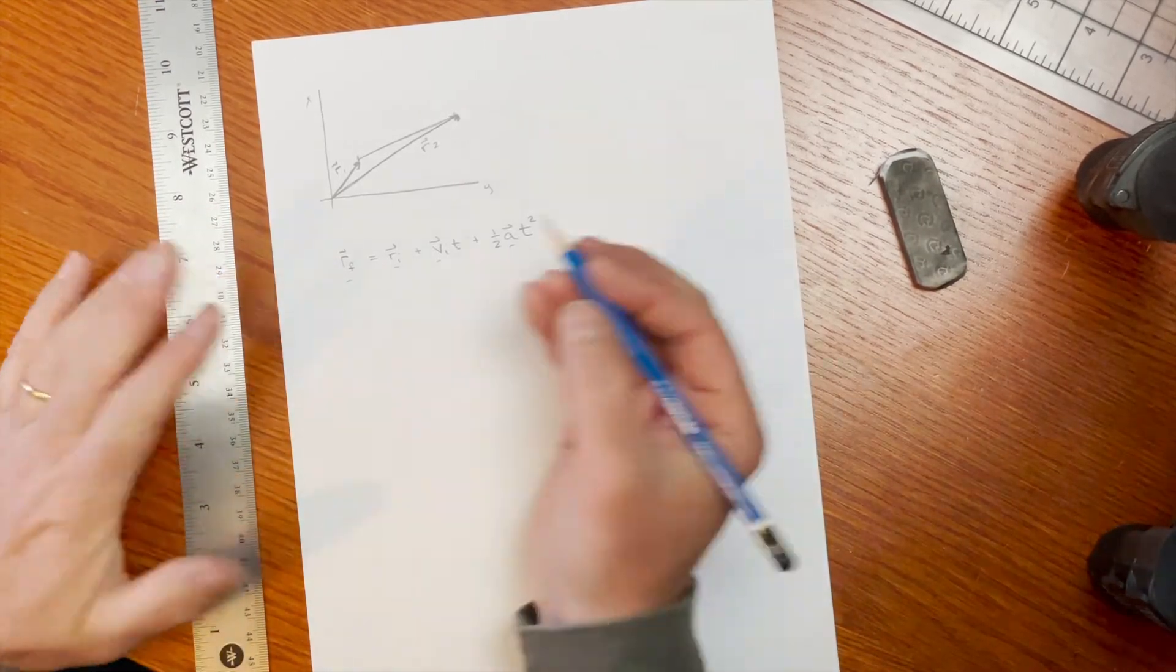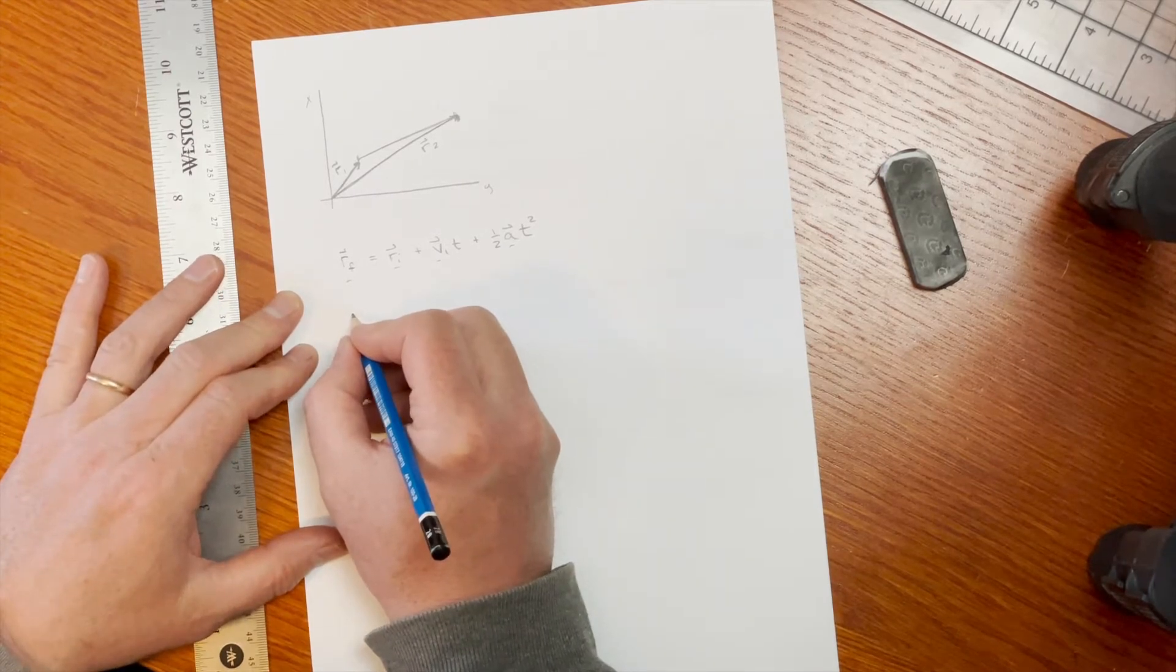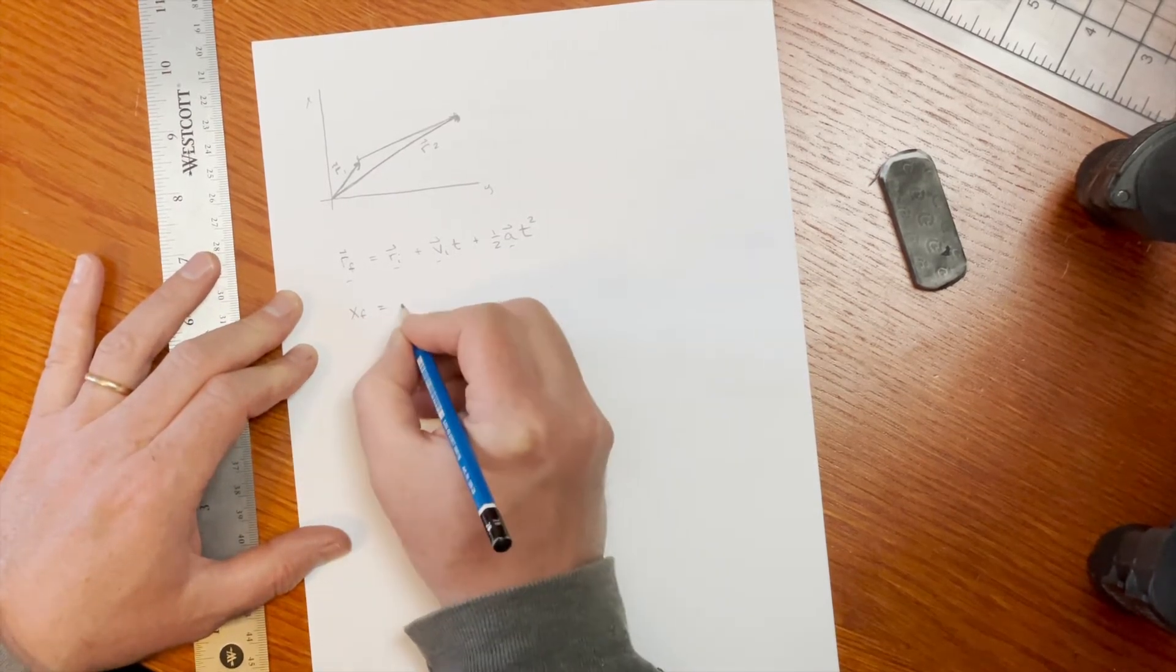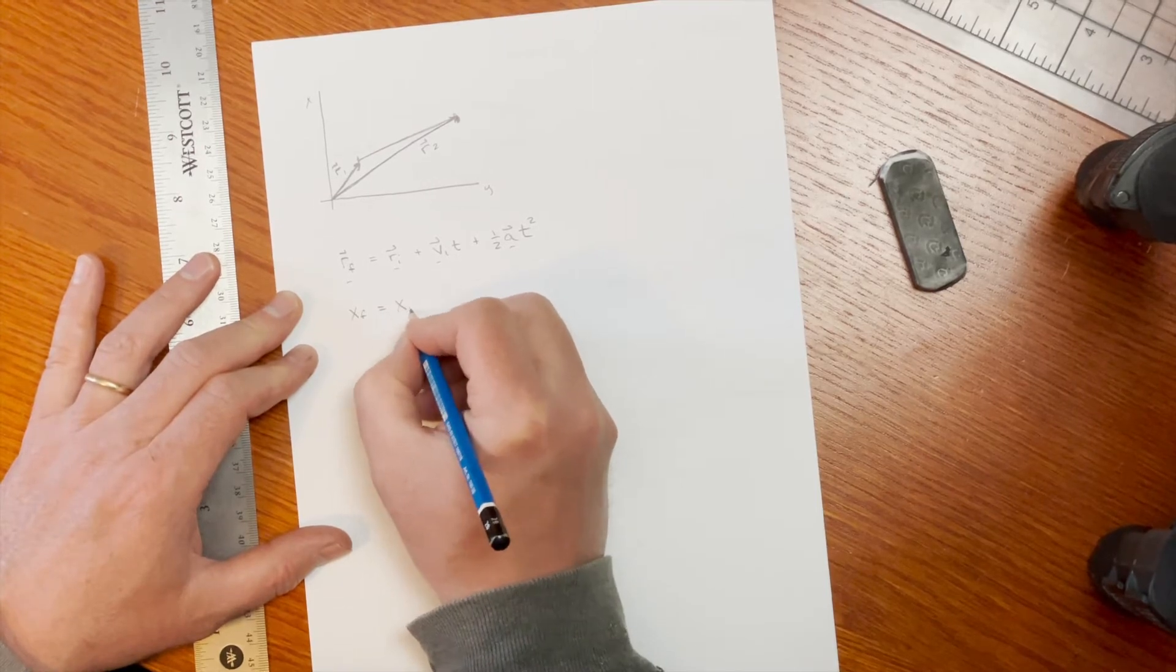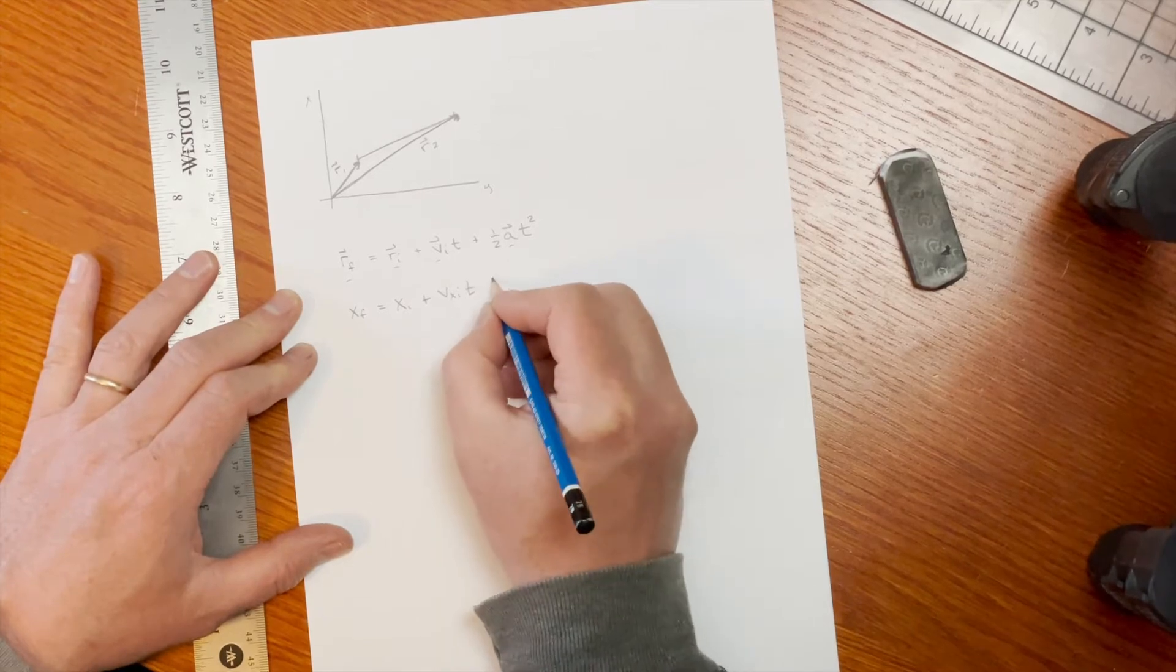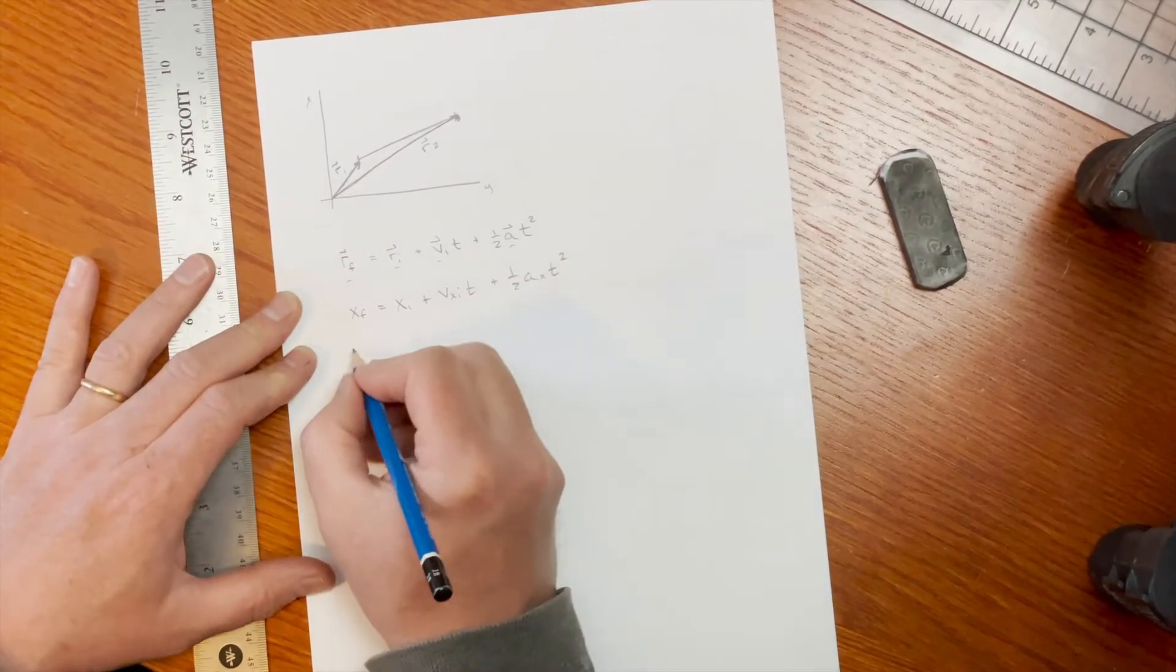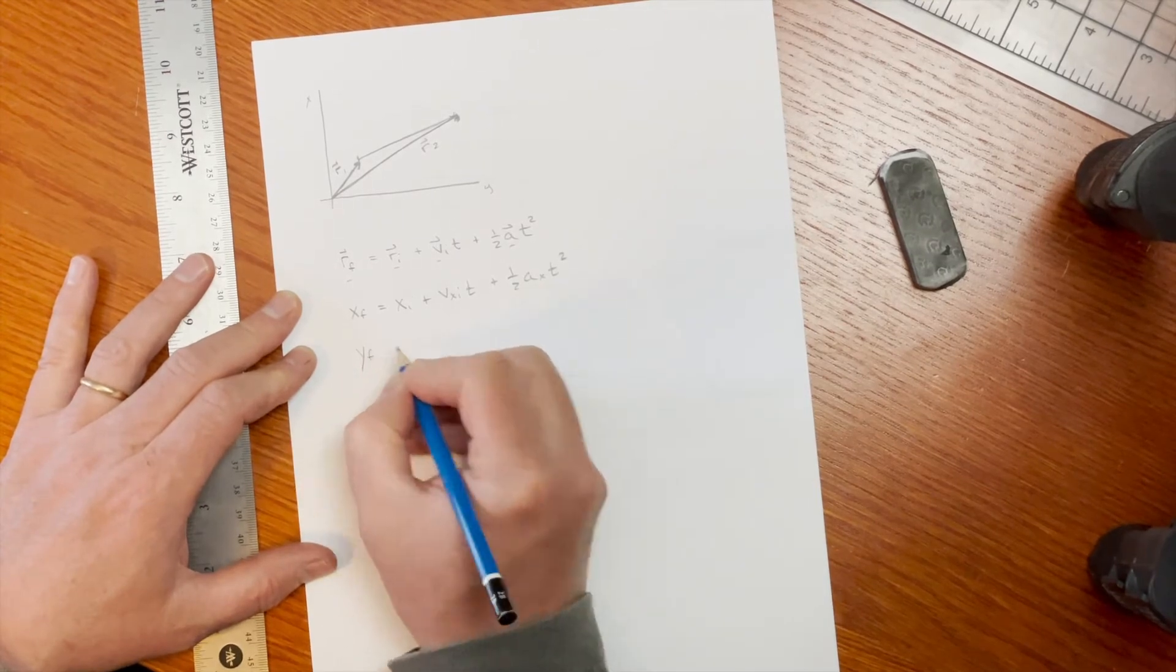And I can write these down, one for each dimension. So I can have my x position: x initial plus vx initial times t plus one half ax t squared. And then I can have my y position: y initial plus vy initial times t plus one half ay t squared.